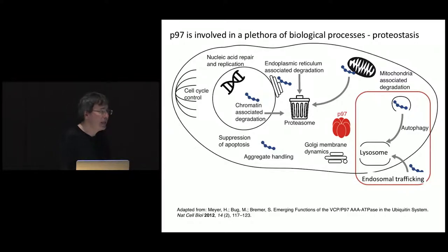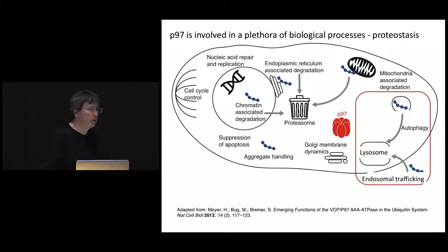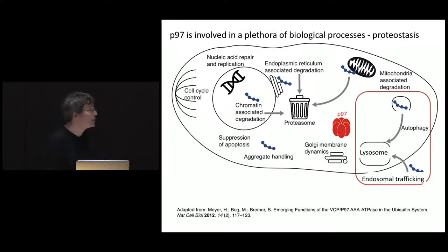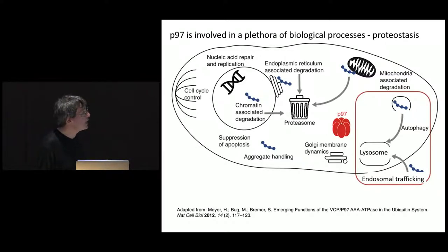The story I want to tell today involves disease mutations that impair the lysosomal degradation pathway. P97 carries out many different functions, and the question is how does it know what it's supposed to be doing and when? The answer is a large number of adapter molecules — in the human cell, over 40 different adapter molecules interact with P97, directing it to specific biological functions. One class of adapter tells P97 to get involved in lysosomal degradation, another in Golgi membrane dynamics, another in ERAD.